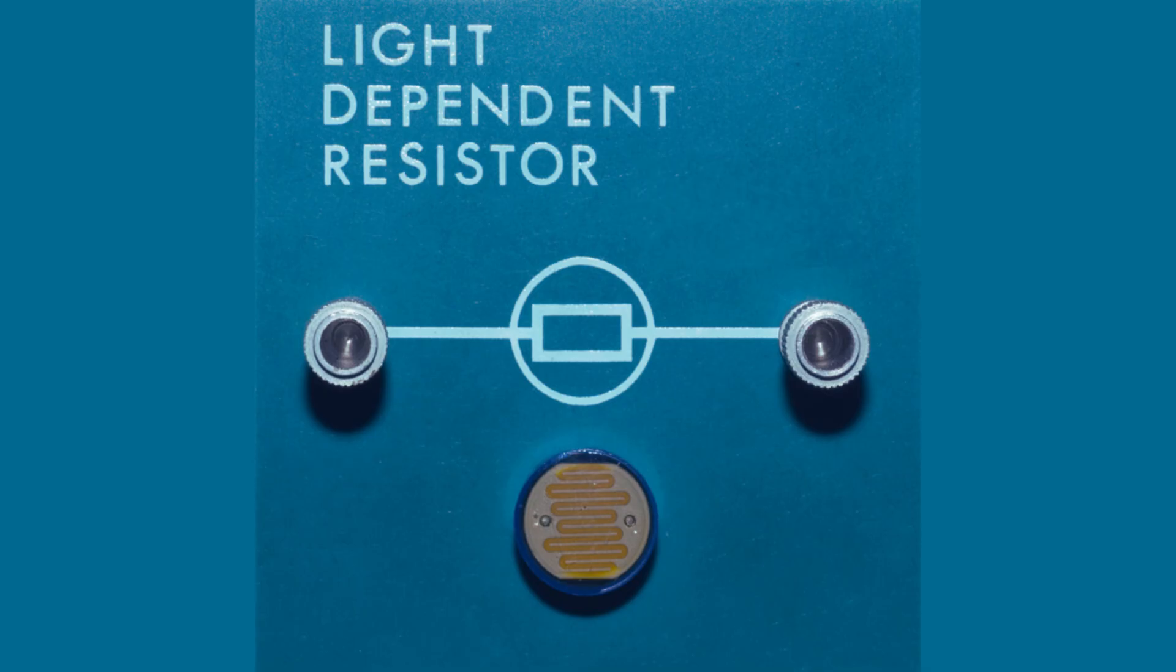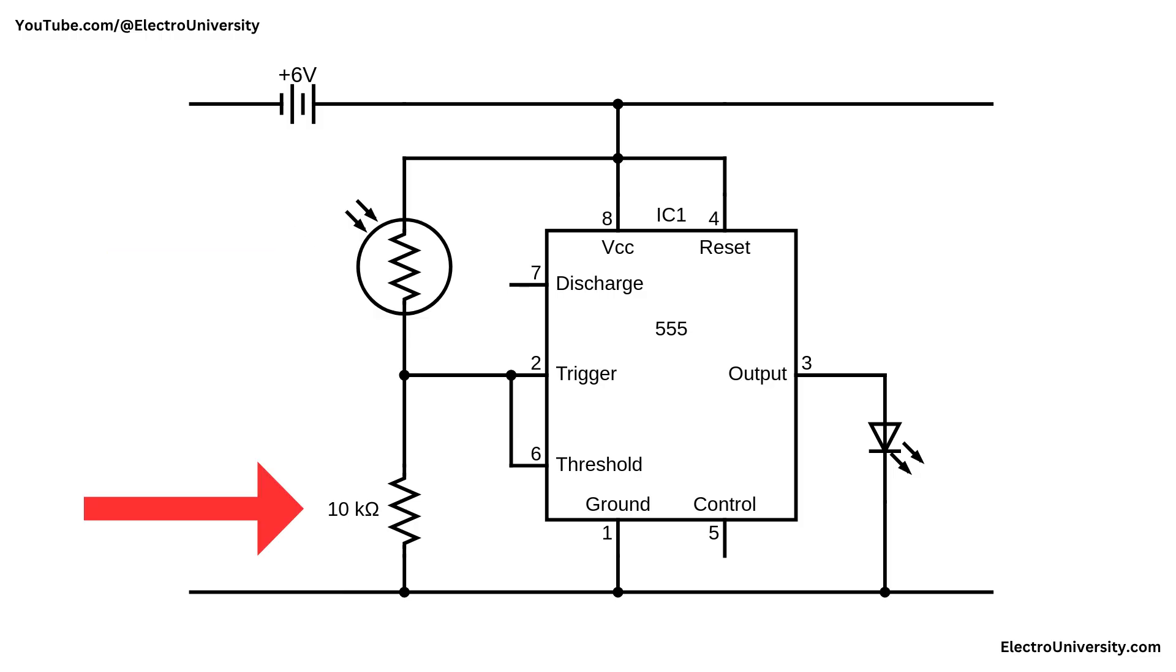In darkness, the material becomes less conductive, so the resistance rises dramatically, sometimes up to several megaohms. This behavior makes the LDR perfect for light sensing circuits. The junction between the LDR and the resistor is connected to pin two or trigger of the 555 timer. During the daytime, the LDR's resistance is low because it receives light, causing the voltage at pin two to remain high. This keeps the output at pin three of the 555 timer low, so the LED stays off.